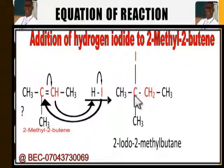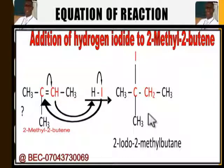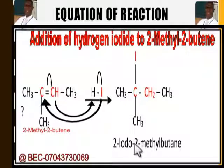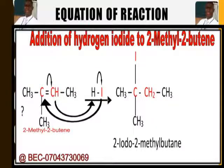It is '2,2-' because the iodine is attached at carbon 2 and the methyl group is also attached at carbon 2. In naming organic compounds, you follow the lowest possible number. Counting from one end gives 3,3-, but counting from the other end gives 2,2-. Since you follow the lowest possible number, you count from the direction that gives 2,2-, yielding the name 2-iodo-2-methylbutane.